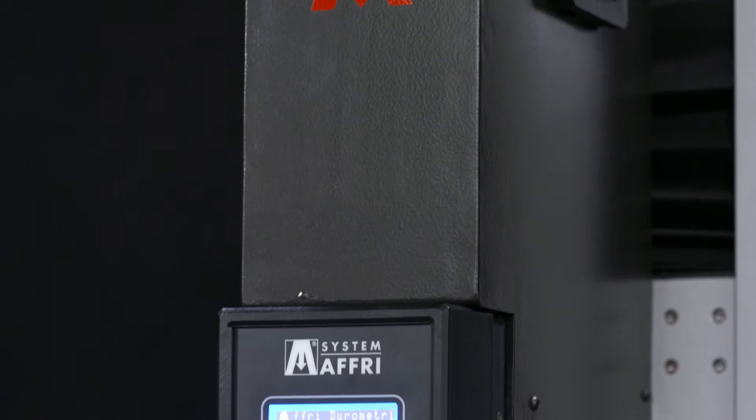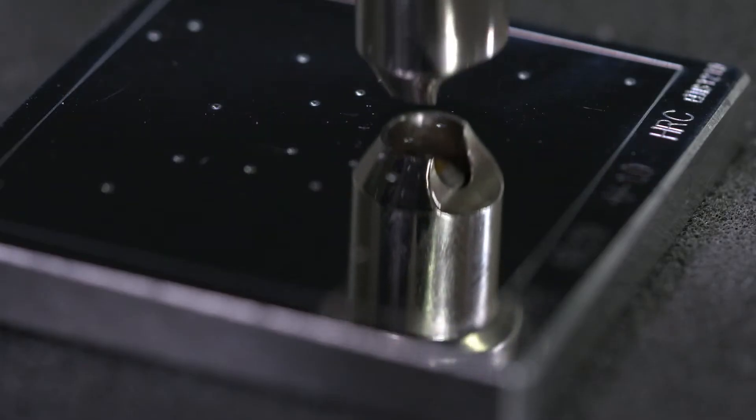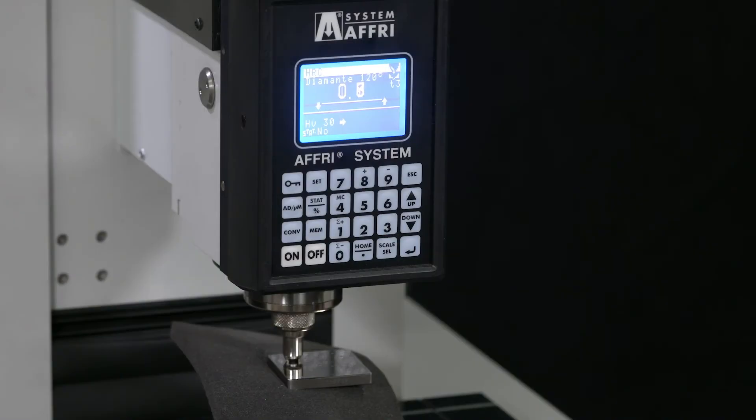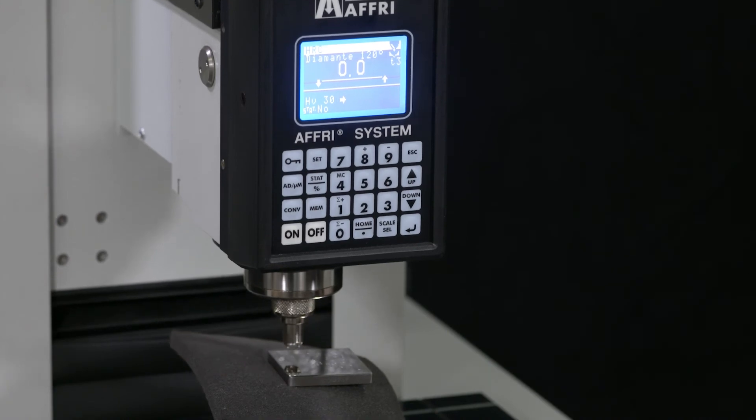In the event of structural failure or bending, the measuring head follows the surface of the piece while maintaining the test force.